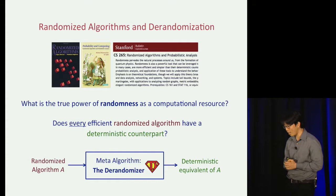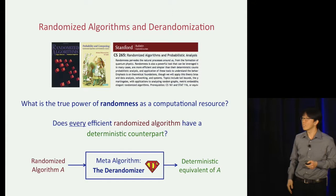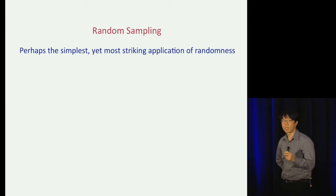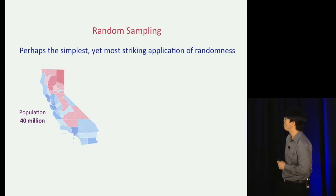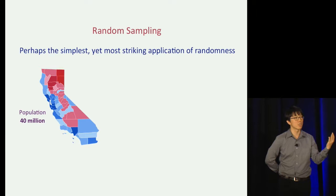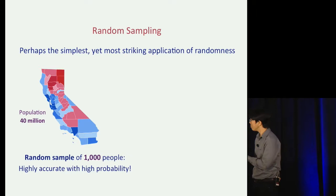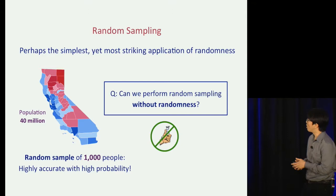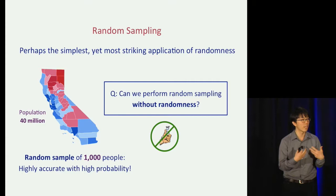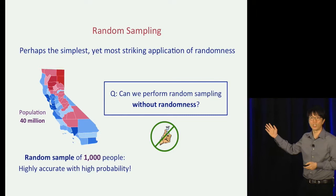I'll focus on one aspect: the role of randomness in random sampling. Random sampling is one of the most basic primitives in randomized algorithms — perhaps the simplest and yet most striking application of randomness, not just in computer science but throughout the sciences. For example, suppose we'd like to find out what California thinks about a certain issue. The population is roughly 40 million people, but we do not have to talk to every single person. A random sample of just a thousand people is guaranteed to be highly accurate with high probability.